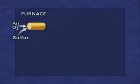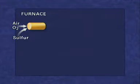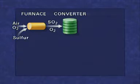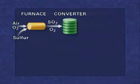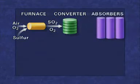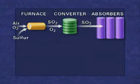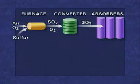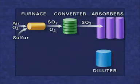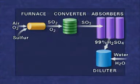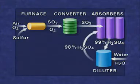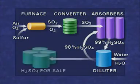Sulfuric acid is formed by burning sulphur in a furnace to form sulphur dioxide. In a converter, the sulphur dioxide reacts with more air to form sulphur trioxide. In absorbers, the sulphur trioxide mixes with fairly concentrated sulphuric acid to increase the concentration of the acid. The acid is then diluted to the concentration needed by the customer. Some acid is recycled through the absorbers, and some is stored for sale.